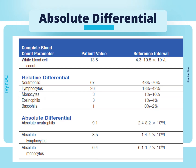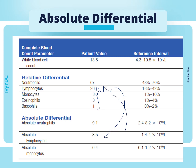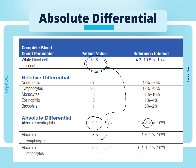To compute the absolute differential, multiply the relative differential by the WBC count. For example, 67% (0.67) multiplied by 13.6 gives an absolute neutrophil count of 9.1. Performing the same calculation for all cell types, if the absolute neutrophil count is higher than normal values while lymphocytes and monocytes are within their limits, we can conclude that the increase in white blood cell count is caused by neutrophils alone — indicating absolute neutrophilia.